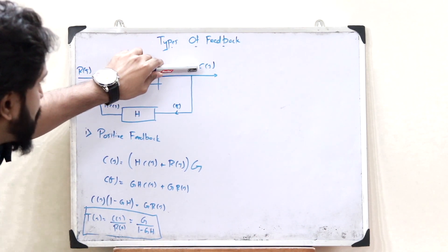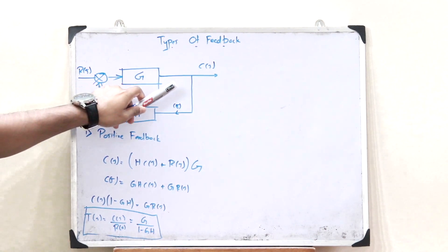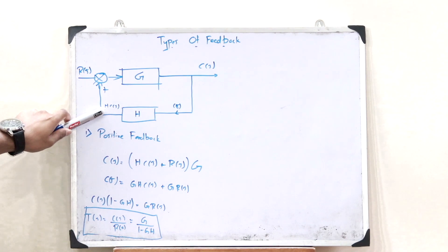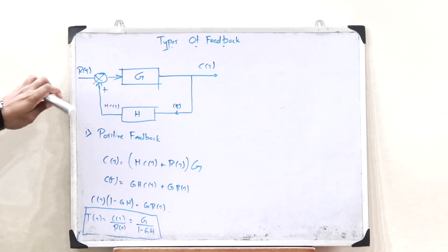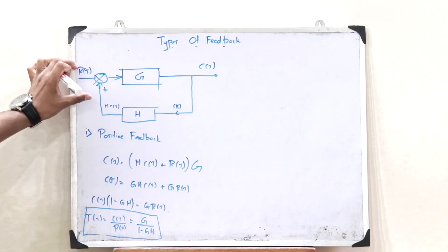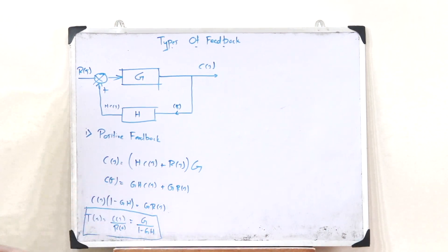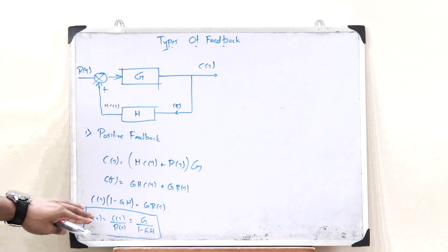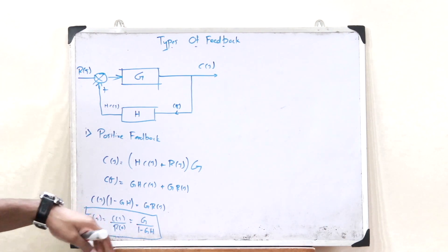This particular output signal is provided as feedback to the input. As it passes through H, C of S gets multiplied with H, and we have H into C of S. This is then added with R of S, and the sum is passed through G. On simplifying and computing the transfer function T of S equals C of S divided by R of S, we get T of S equals G divided by (1 minus GH).